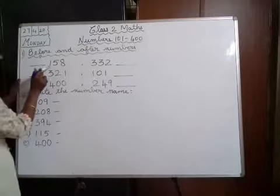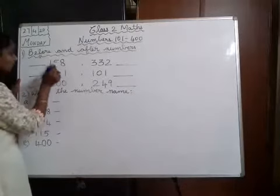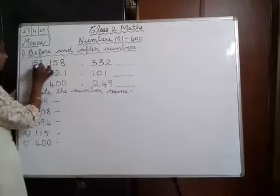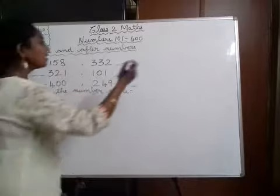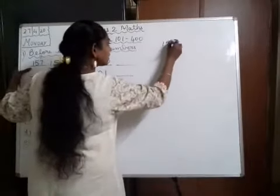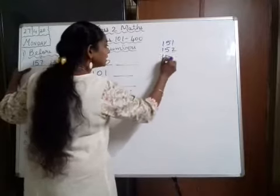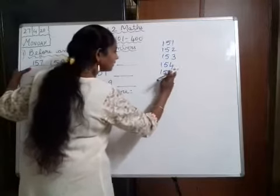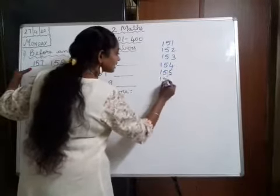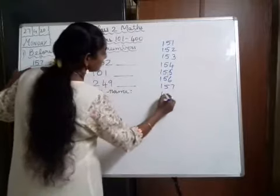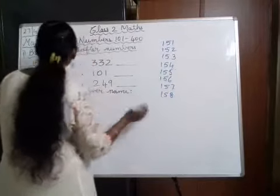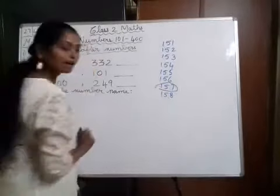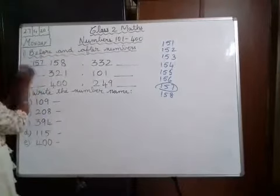Before means — for example, 158 — the before number will be 157. You have to say the numbers from 151, 152, 153, 154, 155, 156, 157... then 158. So before 158, which number comes? 157. I have written it here.